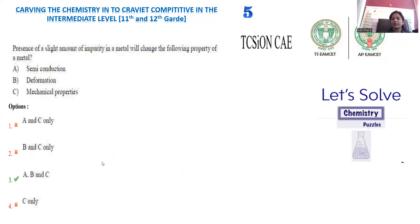Move on to question number five, collected from the Telangana Gurukulam competitive examination. The presence of a slight amount of impurity in a metal will change the following properties. Is there any possibility of semi-conduction, deformation, or mechanical properties? The expected answer is that A, B, and C are all correct — located in option number three.